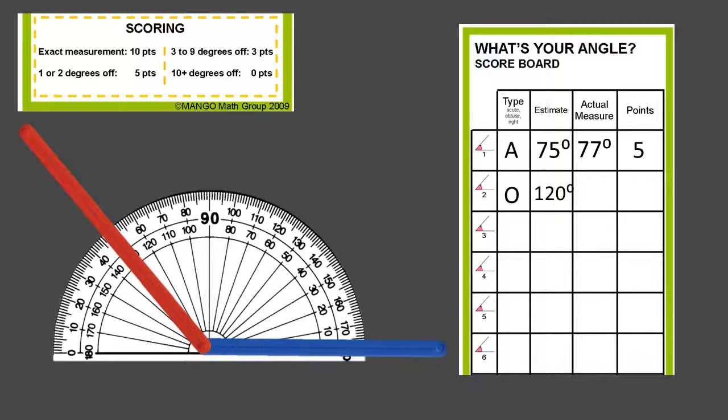They're going to get their protractor and measure exactly. It looks like it's 130 something, 132 degrees. They are then going to use their score sheet to determine what they got. In this case they were off more than 10 degrees, so they got 0 points.